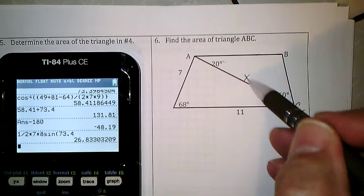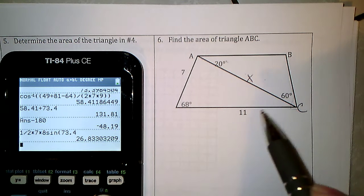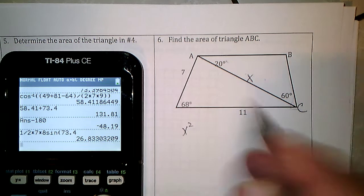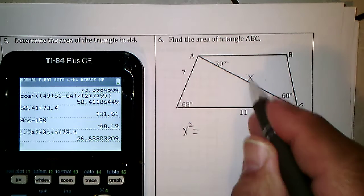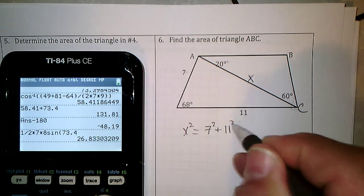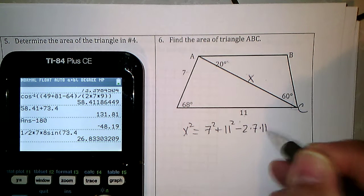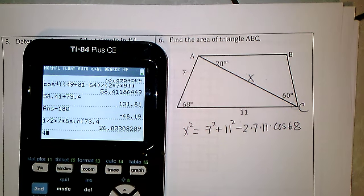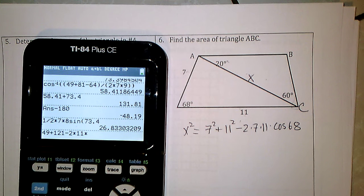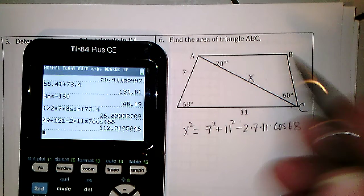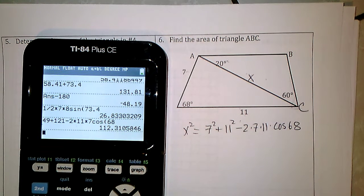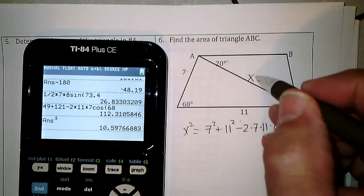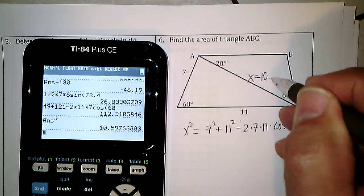X² = 7² + 11² − 2(7)(11)cos(68°). So 49 + 121 − 2 × 11 × 7 × cosine of 68 equals X². Taking the square root — to the 0.5 is the square root — X has to be 10.597, about 10.60.